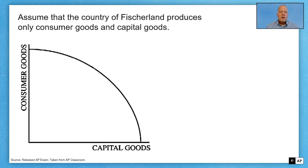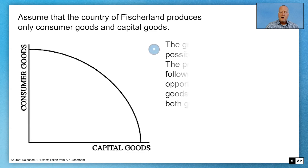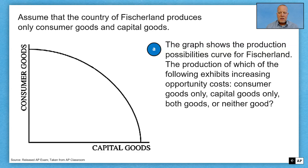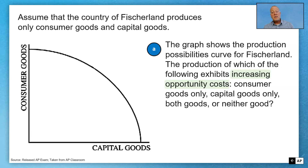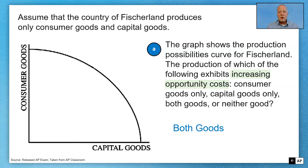Let's move on to another question. Assume the country of Fisherland produces only consumer goods and capital goods, and they've given us a PPC — throwing it back to Unit 1. Part A: the graph shows the production possibilities curve for Fisherland. The production of which exhibits increasing opportunity costs — consumer goods only, capital goods only, both goods, or neither good? We're looking for increasing opportunity costs. The only way we know without data is to look at the shape of the curve.